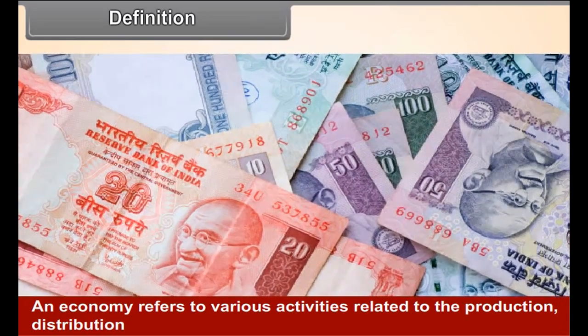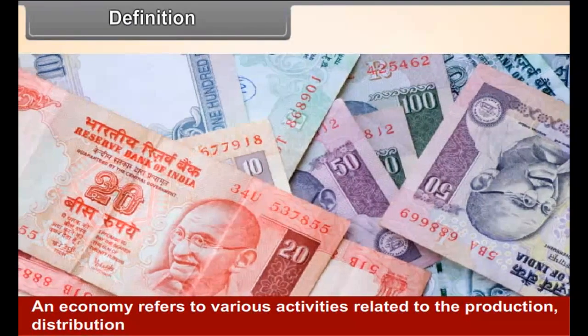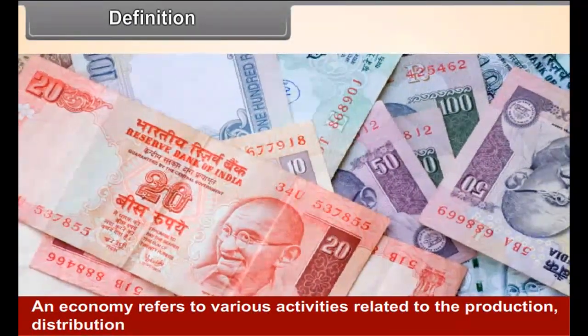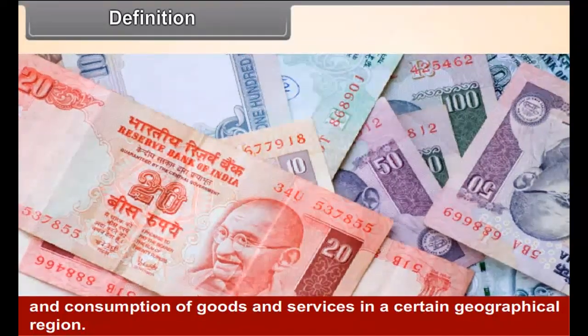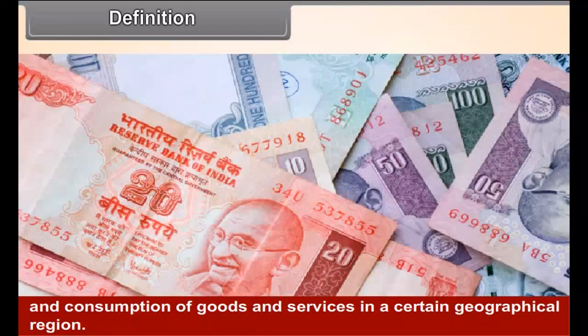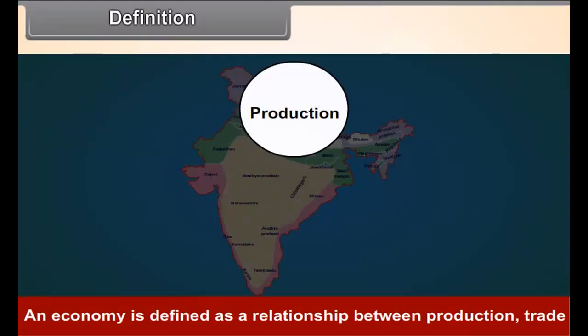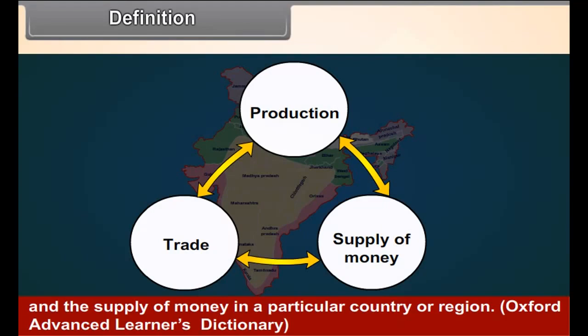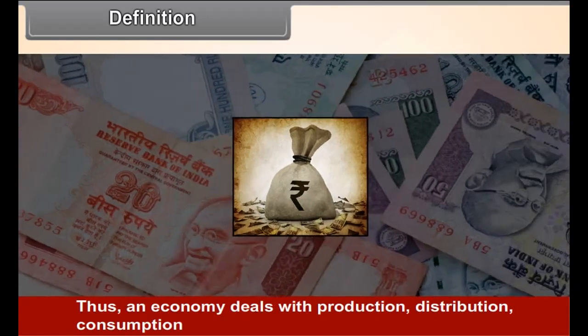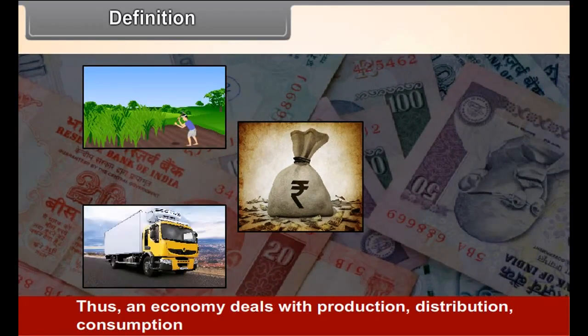An Economy refers to the various activities related to production, distribution and consumption of goods and services in a certain geographical region. An Economy is defined as a relationship between production, trade and the supply of money in a particular country or region. Thus, an Economy deals with production, distribution, consumption and allocation of available resources in a particular area.